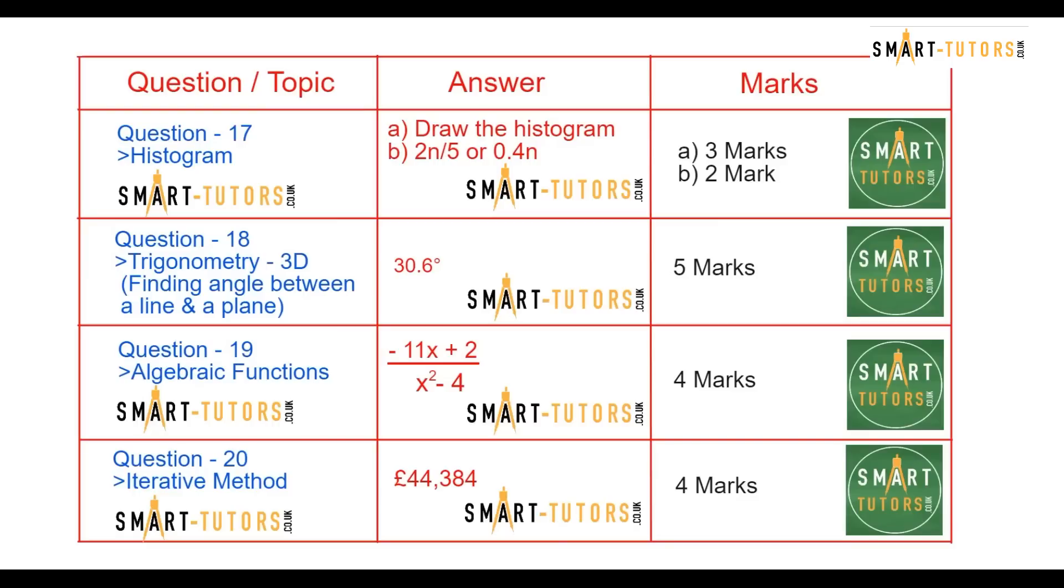And question number 20 is an iterative process. A generic iterative general process equation is given. So the year one and year two is given. They ask you to predict the year three. We may explain this question in later today.